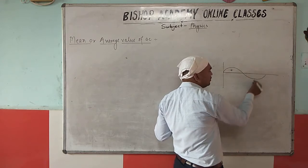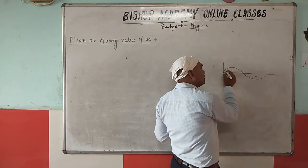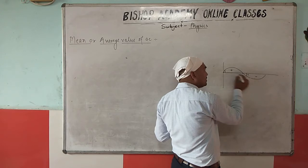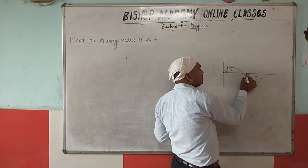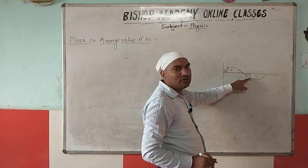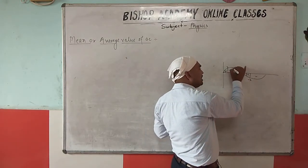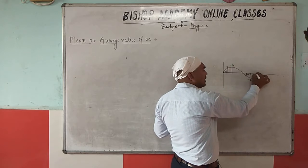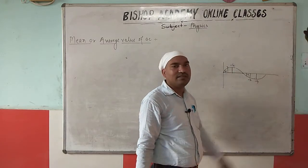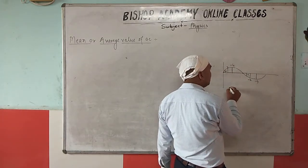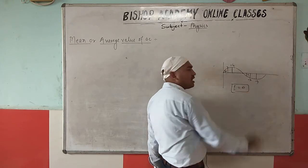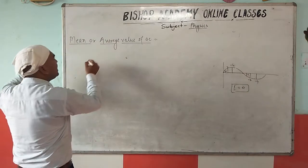In a complete cycle, the positive part and the negative part exist equally. If the current is 1A on the positive side, it is −1A on the negative side. If it is 2A positive, it is −2A negative. Every positive value has a corresponding negative value. So if we sum the total, the net current becomes zero.